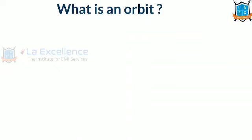What is the meaning of an orbit? An orbit is a path — it is a path in which objects move. Generally, the curved path is known as an orbit.